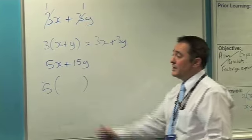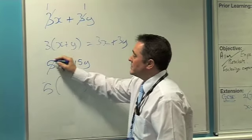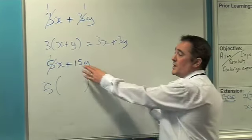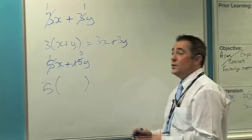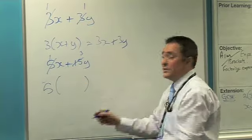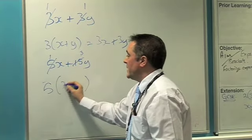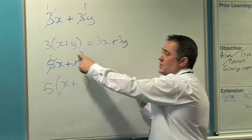What do I have to multiply 5 by to get a 5? The answer is 1. What about this side? What do I have to multiply 5 by to get a 15? The answer is 3. Just write up what's left. x. It's 1 times x gives me x. Plus 3y.